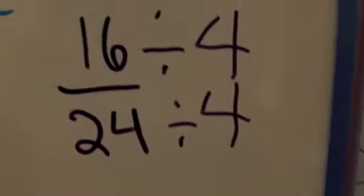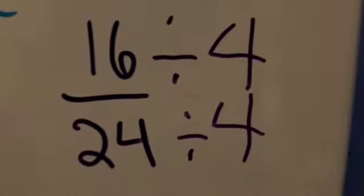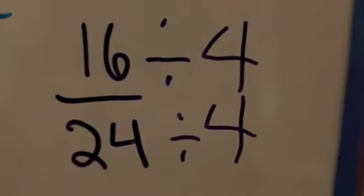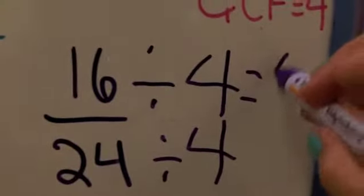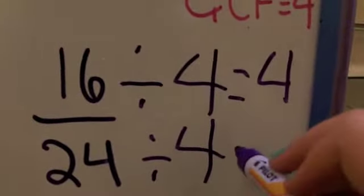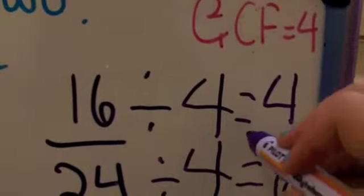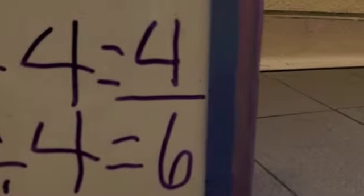So now, my fraction looks like this: 16 divided by 4 and 24 divided by 4. 16 divided by 4 is 4, and 24 divided by 4 is 6. So your new fraction should look like this: 4 over 6.